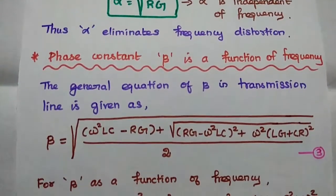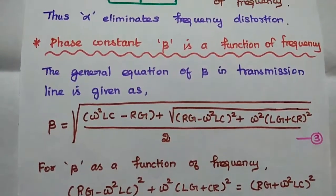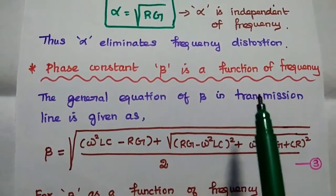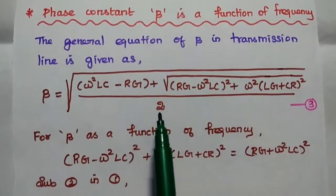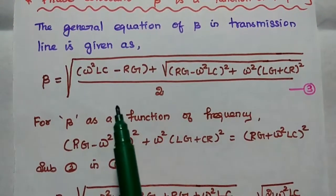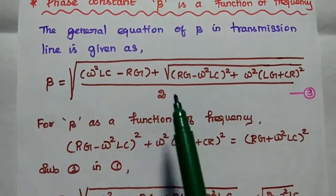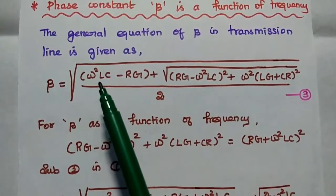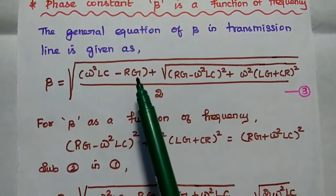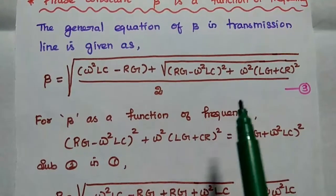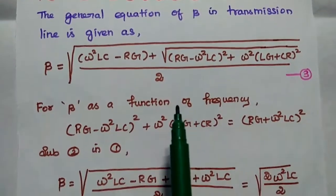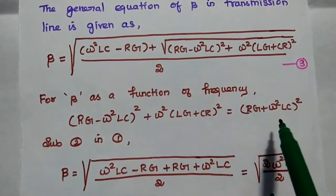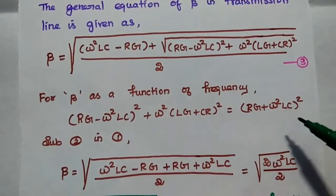The next condition is that phase constant beta is a function of frequency. Alpha is independent of frequency, but beta is a function of frequency. We use the general expression of beta in transmission line — already derived similarly to alpha, with the only change being that the first term becomes omega squared lc minus rg; remaining terms are the same. Consider this as the third equation. For beta as a function of frequency, we consider the second term as rg plus omega squared lc, whole squared — that is the second equation.